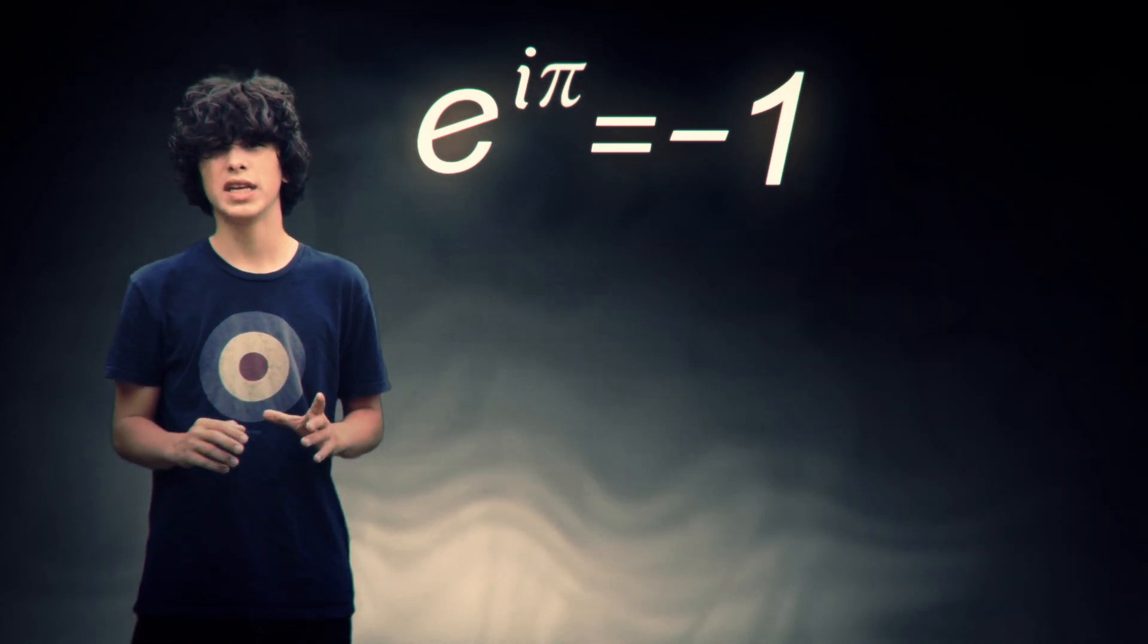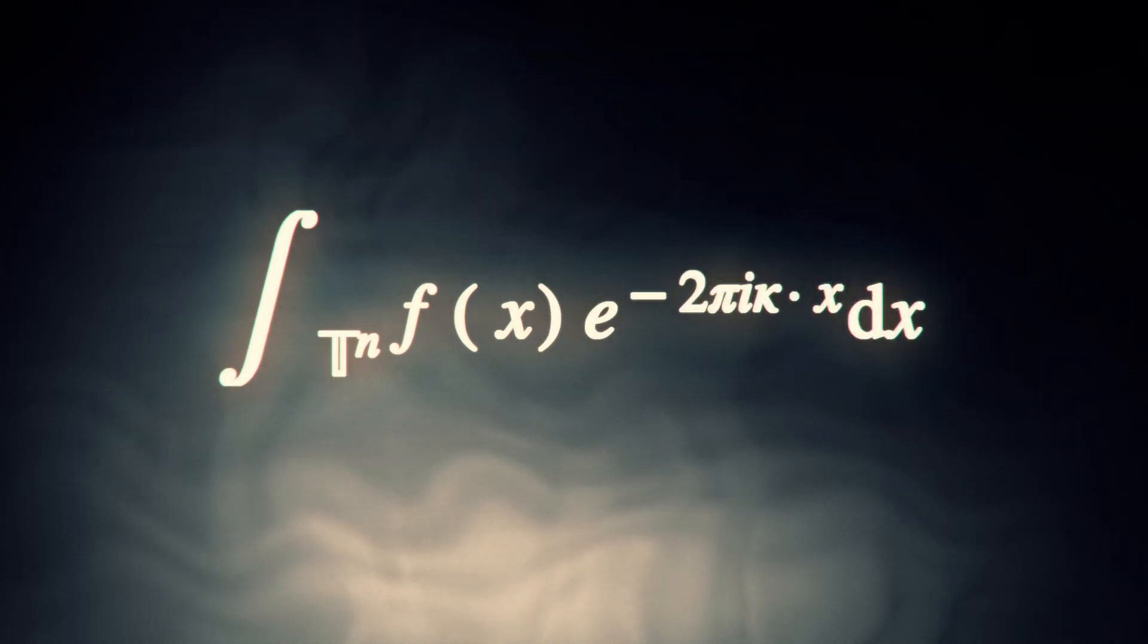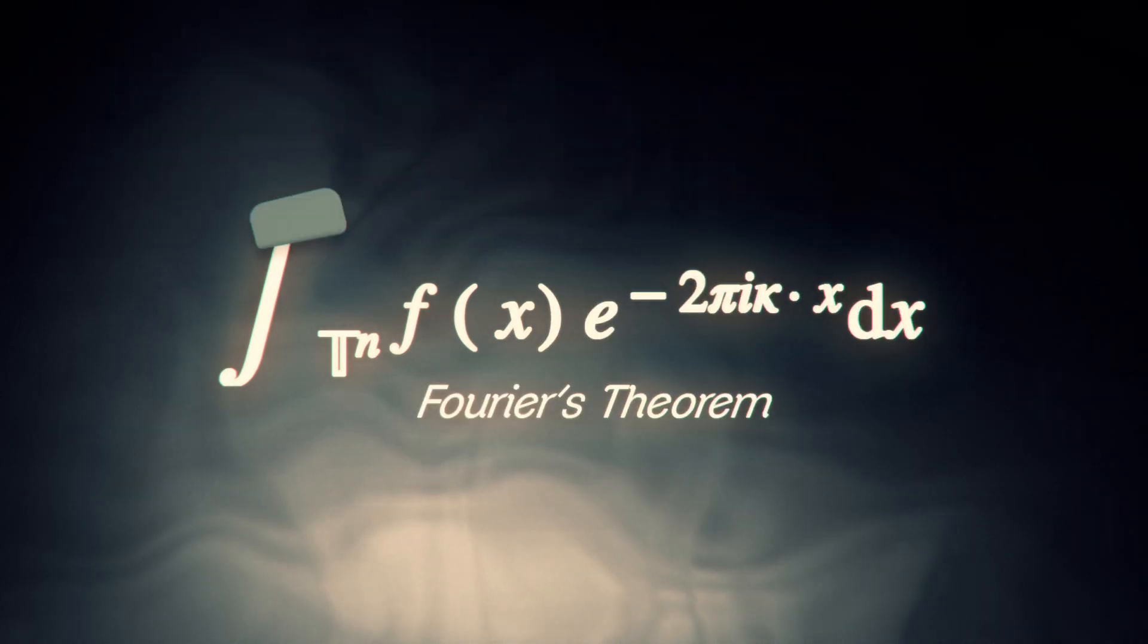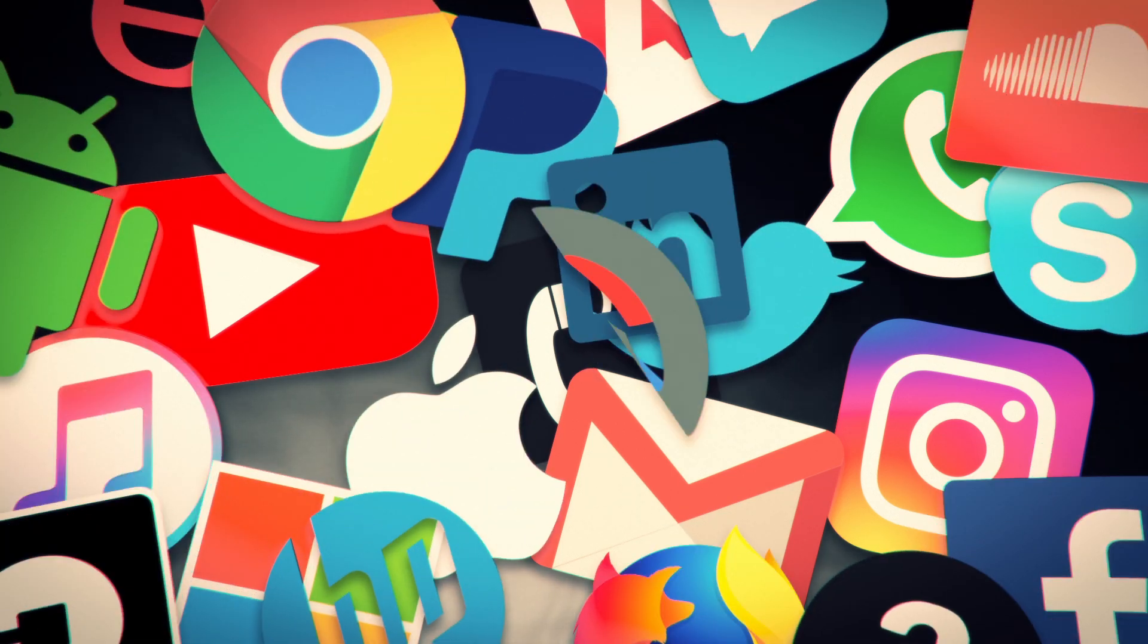Therefore, e to the i pi equals negative 1. This equation is at the center of file compression, which allows YouTube, Instagram, cellphones, and the whole modern tech industry to even exist.